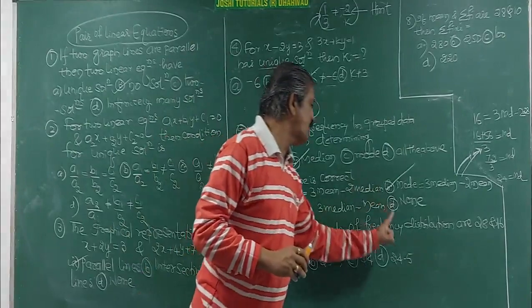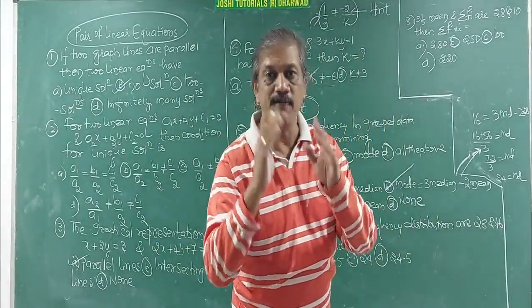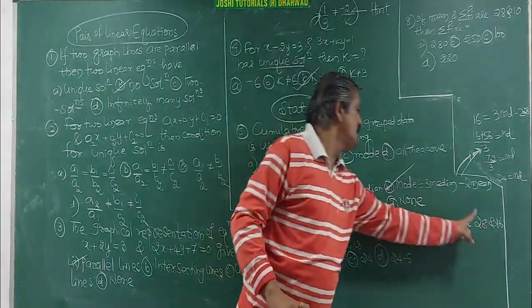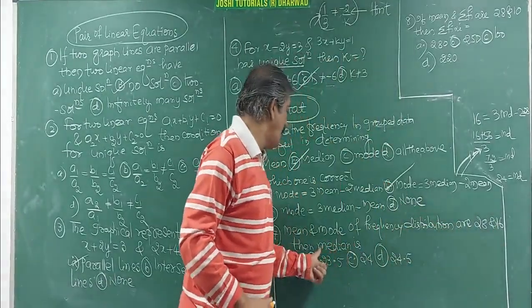Next, mean and mode of the frequency distribution are 28 and 16 respectively. I have not written the word respectively. Means mean is 28, mode is 16. Then what is the median?